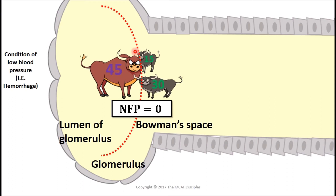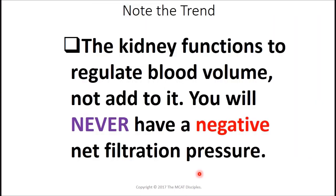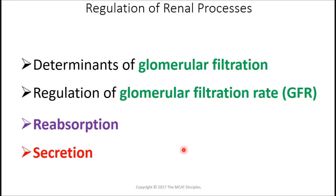The kidney only functions to regulate and conserve volume — it cannot add volume. If you've hemorrhaged, your kidney can't give you more blood. The only thing it can do is prevent further fluid loss by reducing urine formation. You'll never get a negative net filtration pressure, and you'll never get fluid from Bowman's space back into the glomerulus. So: the kidney functions to regulate blood volume, not add to it.